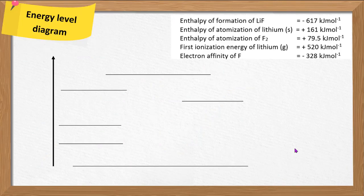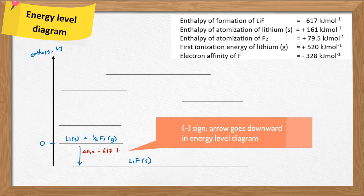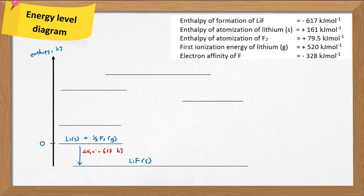Next is the energy level diagram, which has a y-axis labeled as enthalpy or energy in kilojoules. We start with the enthalpy of formation. At the bottom line, we have lithium fluoride solid — always keep the ionic solid compound as one mole. At zero kilojoules on the y-axis, we have elements under their standard state. When one mole of the solid ionic compound is formed from its elements under standard state, this equation must be balanced: one mole of lithium and half a mole of fluorine gas. We label the enthalpy as delta H1 with value negative 617 kJ.